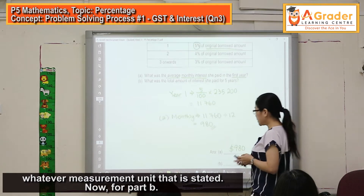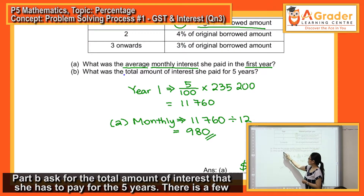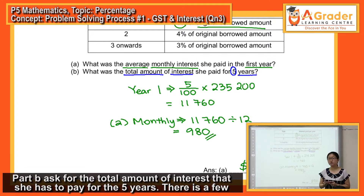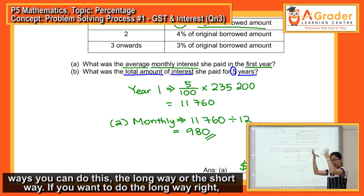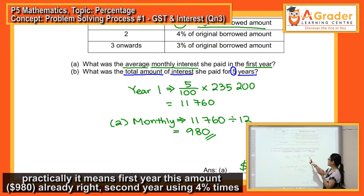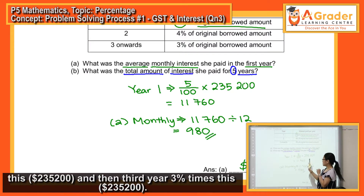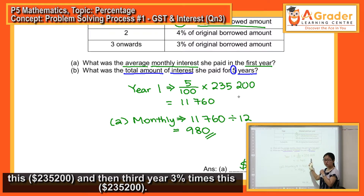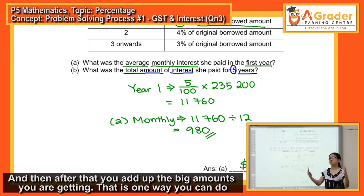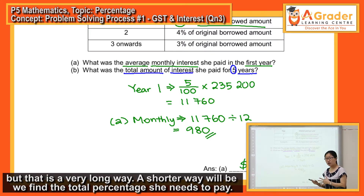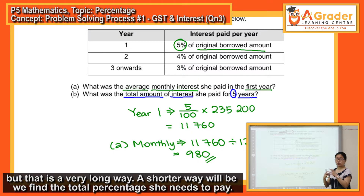For Part B, the question asks for the total amount of interest she has to pay over five years. There are a few ways to do this — the long way or the short way. The long way means finding the first year interest (already done), then second year using 4% times the original, third year 3% times the original, and adding all the amounts. But that is a very long way.